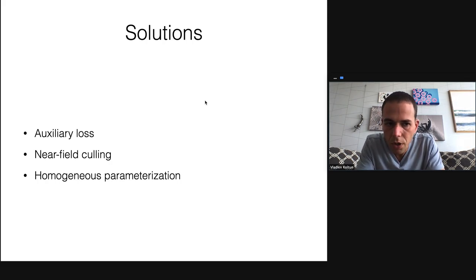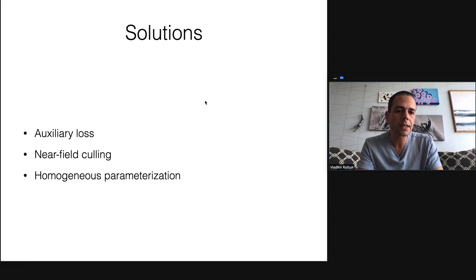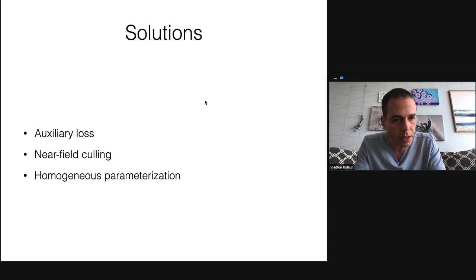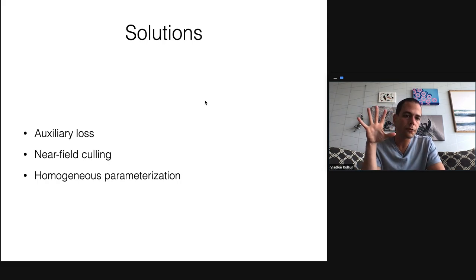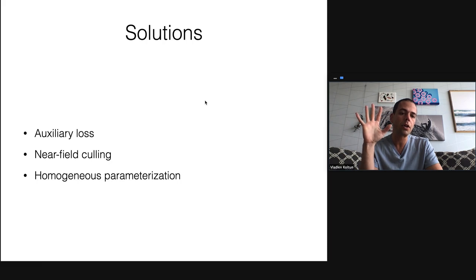We discuss a number of solutions in our work that make NeRF work better — this is what we call NeRF plus plus. To guard against the shape-radiance ambiguity, we introduce an auxiliary loss that helps NeRF steer away from poor solutions that misestimate scene geometry. To guard against the near-field ambiguity, we introduce adaptive near-field culling that culls the front of each view frustum based on scene geometry. And to handle the parameterization issue, we introduce a novel homogeneous parameterization.